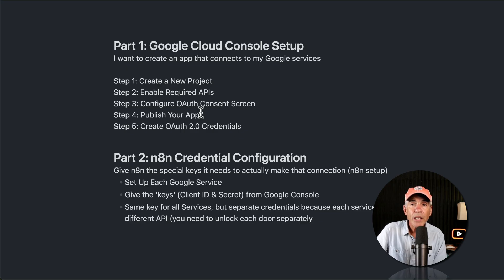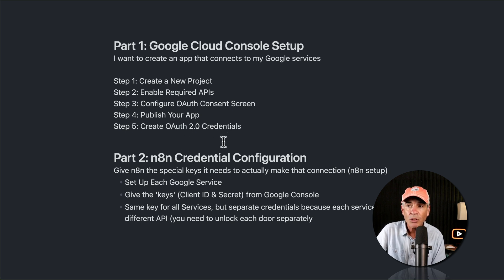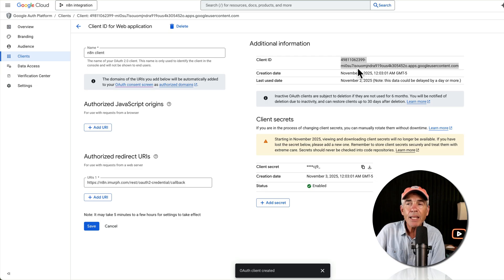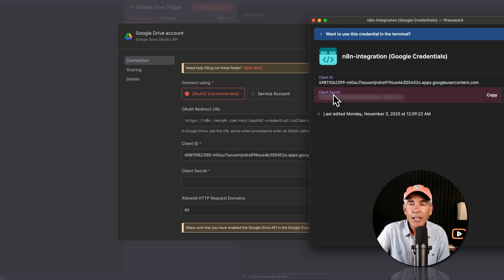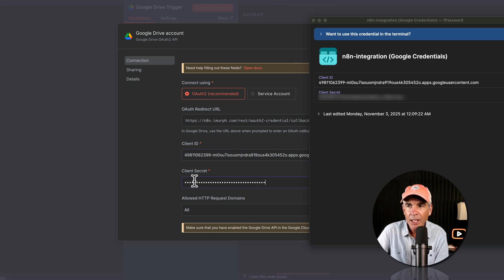We did the heavy lifting in part one. Now in part two we go to N8N and give it our OAuth 2.0 credentials to actually make the connection from N8N to Google. We just need to set up each Google service by giving them the keys — the client ID and the client secret. I have the client ID copied to my clipboard; I'm going to go into N8N where I still have the credentials open and paste in the client ID.